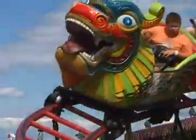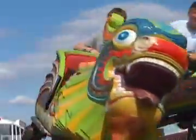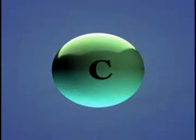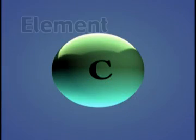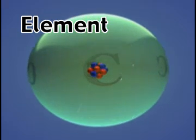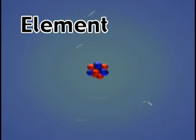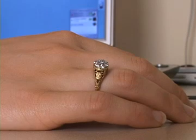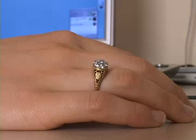The matter around us consists of one or more elements. What exactly is an element? An element is a chemically pure substance that cannot be broken down into a simpler substance. All matter is made from about 100 different kinds of elements.